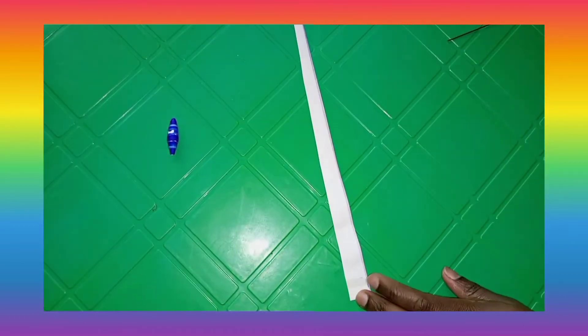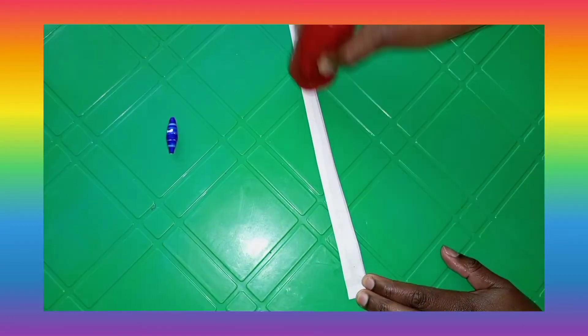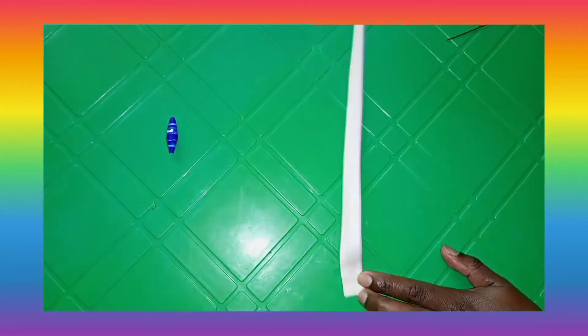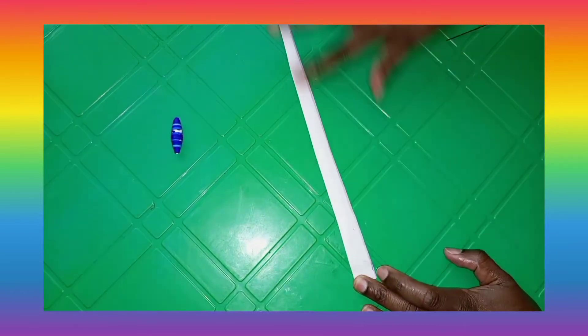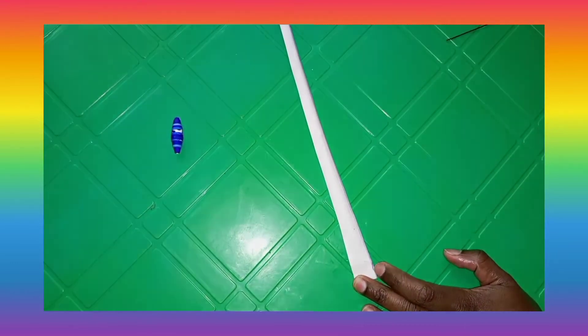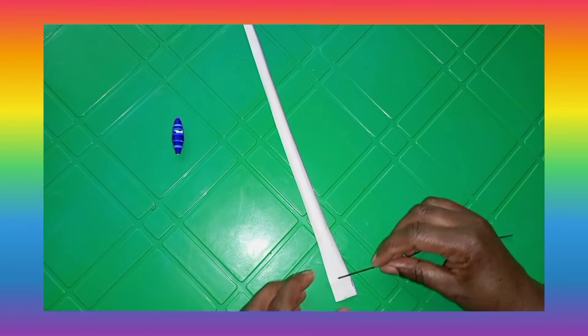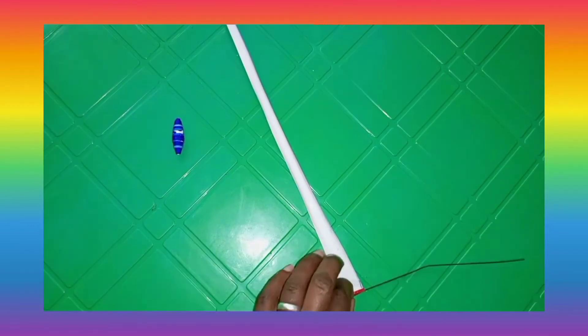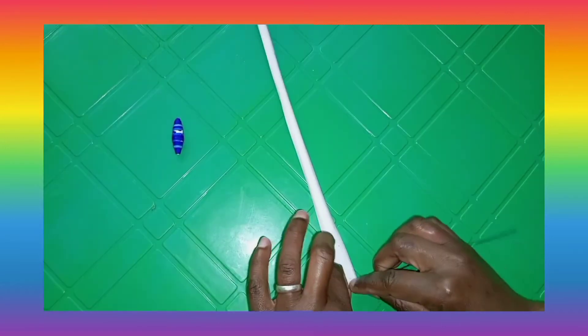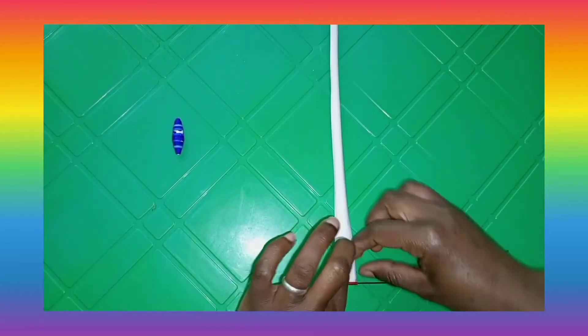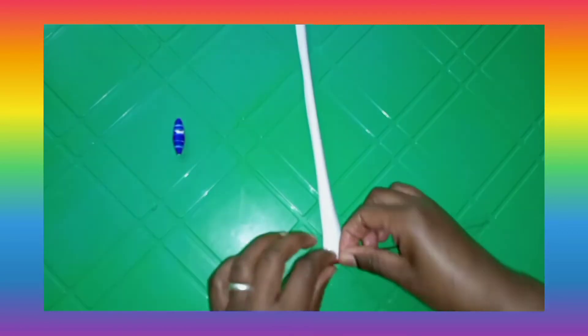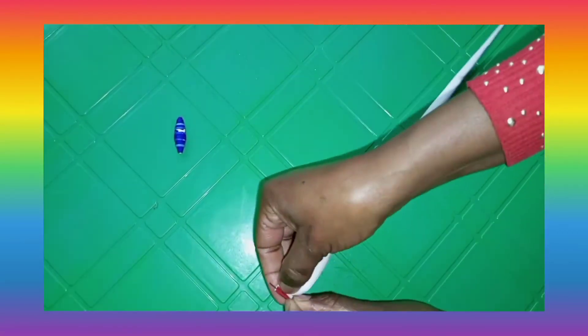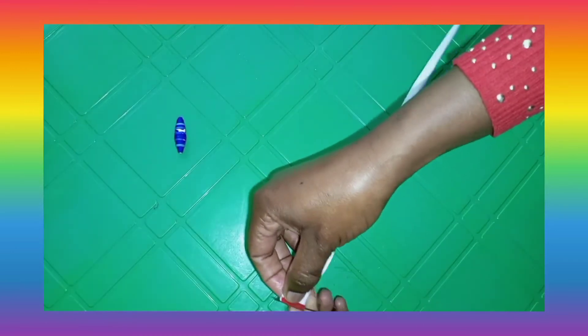Okay, let's do the red one. As usual, apply glue on the wrong side of the paper. Don't apply on the right side, just apply on the wrong side and then start rolling it just like we did with the blue one.